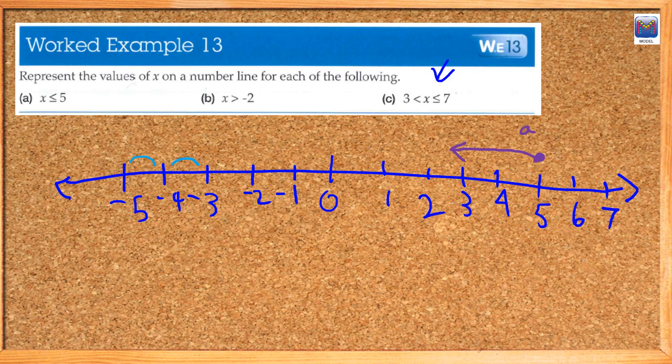In B, x is greater than negative 2. So it's not negative 2, but it's greater than negative 2. And we represent that with the green on there. That's B.